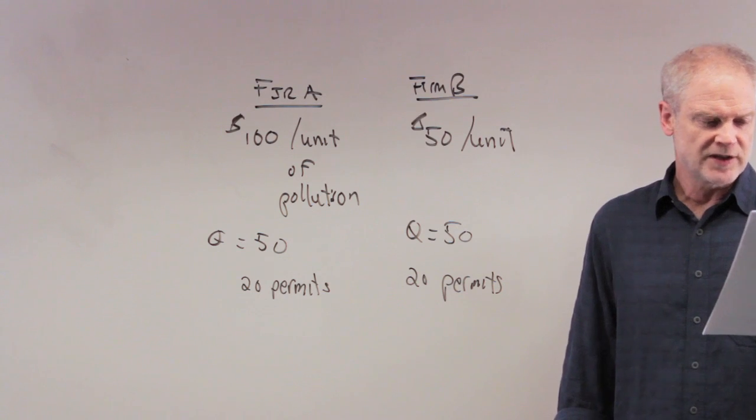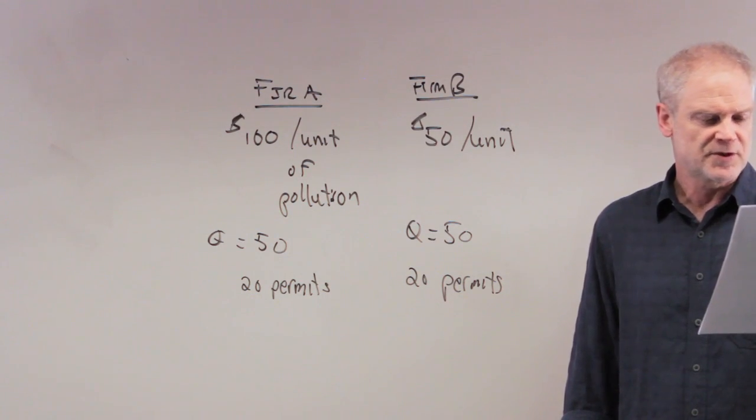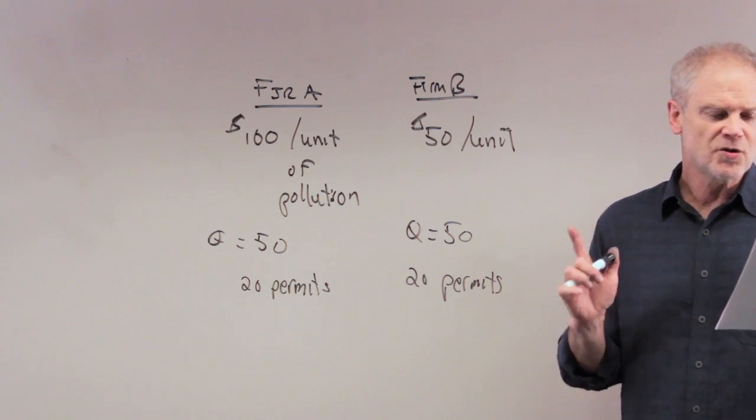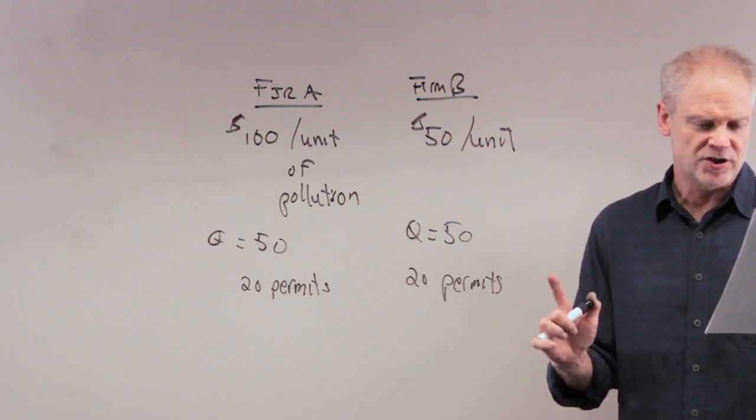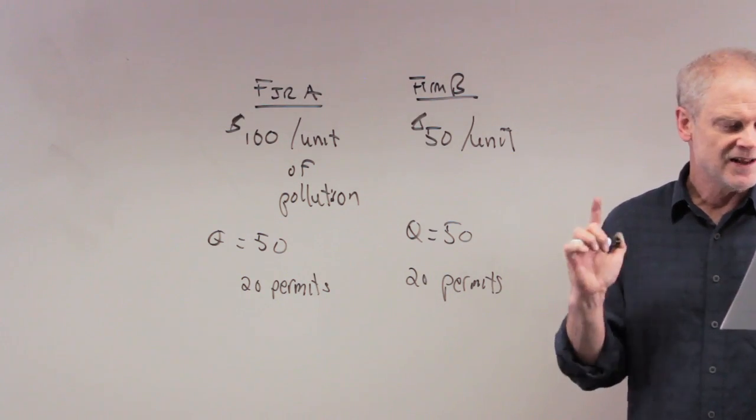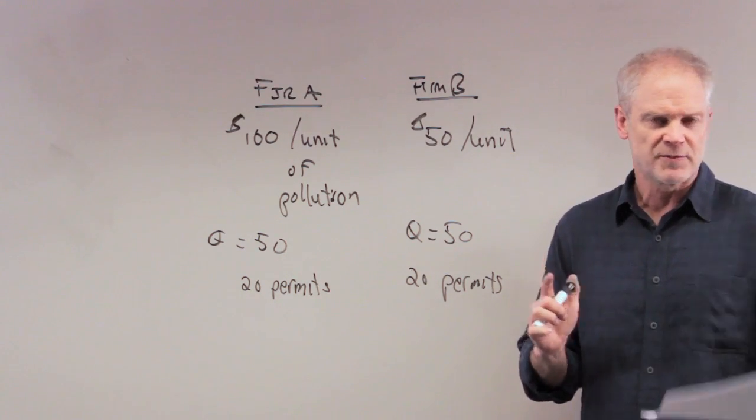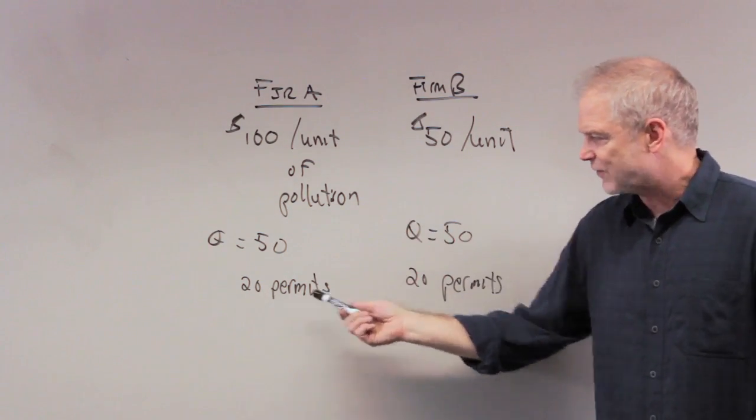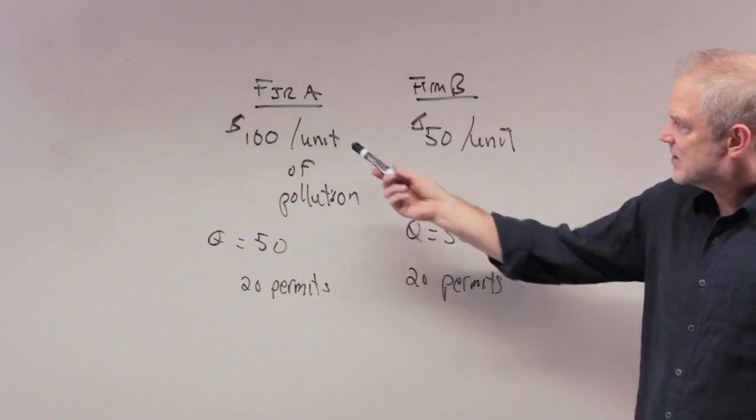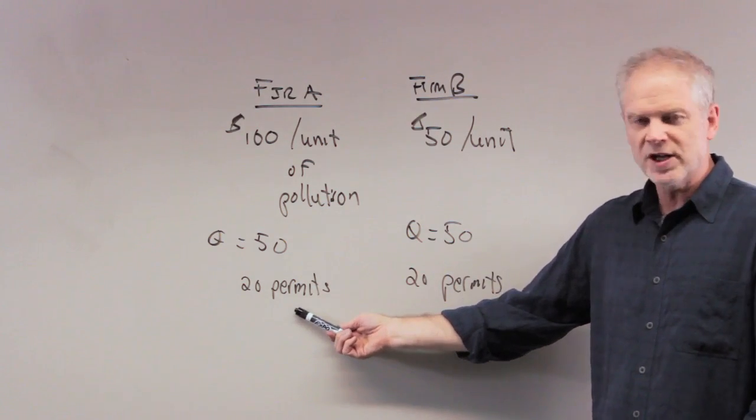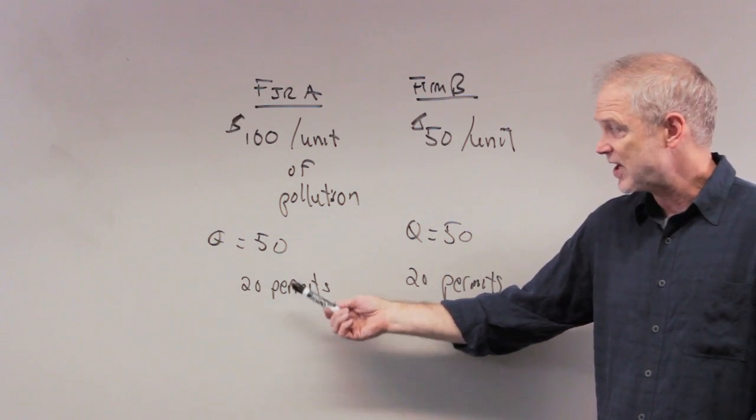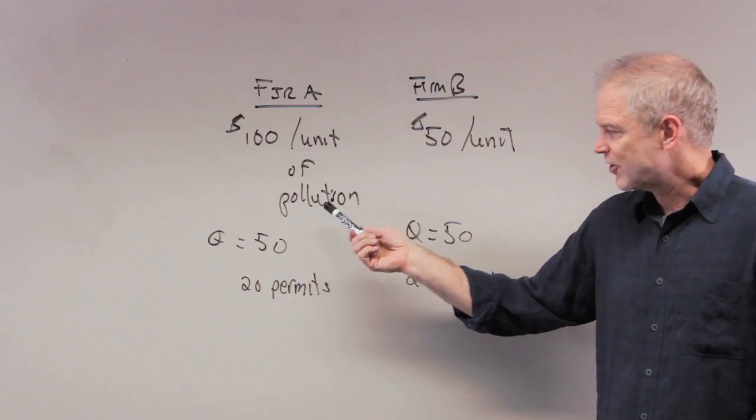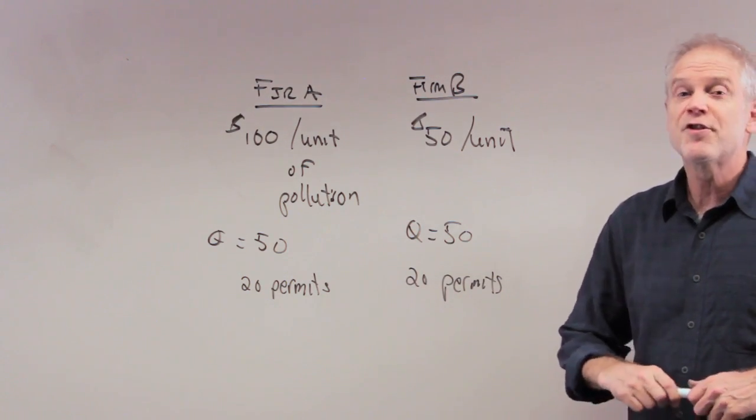Government officials are not sure whether to allow the firms to buy or sell pollution permits to each other. What is the total cost of reducing pollution if firms are not allowed to buy and sell pollution permits from each other? I can give each firm 20 permits. That means firm A can only produce 20 units of pollution, or only dump 20 units, even though they are producing 50. So firm A must get rid of 30 units of pollution.